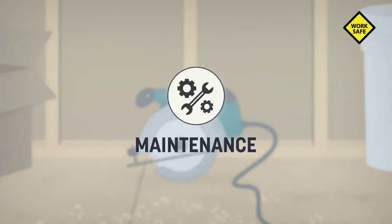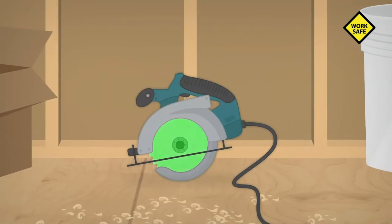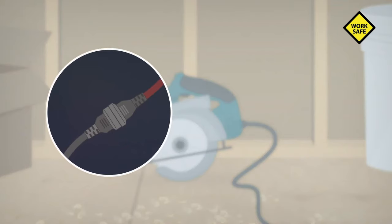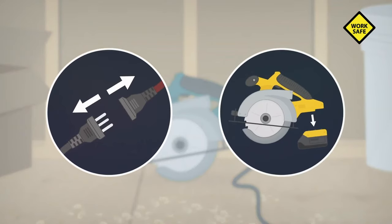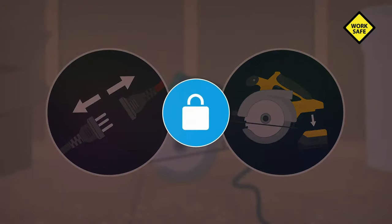If your machinery or equipment needs maintenance, such as a blade replacement, you should, at minimum, unplug it or remove the battery. In some cases, lockout will be required.